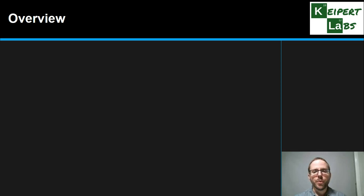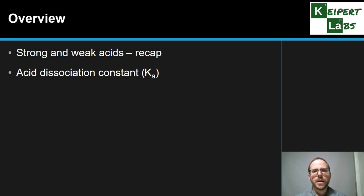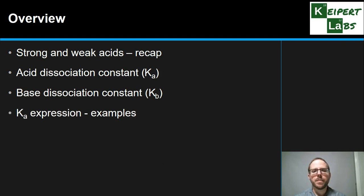We're going to start by recapping what we mean by strong and weak acids. We're then going to introduce this concept of the acid dissociation constant Ka. We're going to look at its counterpart for bases, called the base dissociation constant Kb. We're going to look at the Ka expression, thinking about how it connects with an equilibrium and look at some examples. And we'll see how Ka helps to connect to acid strength.